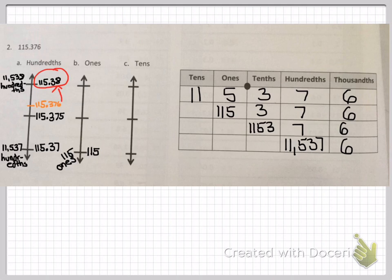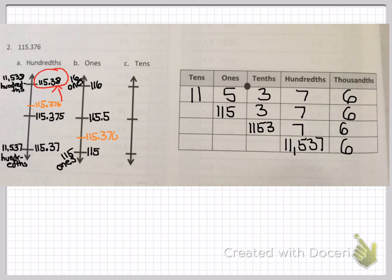Now we're looking at ones. You can see that I put one hundred and fifteen ones at the bottom of the vertical number line, which is the same as one hundred and fifteen. There's a small error — it should be one hundred and sixteen ones, which is equal to one hundred and sixteen, at the top. The midpoint is one hundred and fifteen and five tenths, halfway between one hundred and sixteen and one hundred and fifteen. Our number fits in between one hundred and fifteen point five and one hundred and fifteen. We're rounding down — the closest one is one hundred and fifteen.